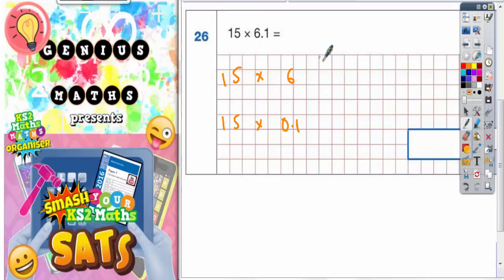So 15 times 6, well that's easy enough to do. We could just do a quick column method. 15 times 6, see where that takes us. 6 times 5 is 30, put the 0 in, carry the 3. And 6 times 1 is 6, plus the 3 is 9. So 6 times 15 is 90.